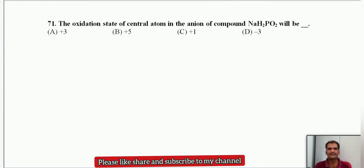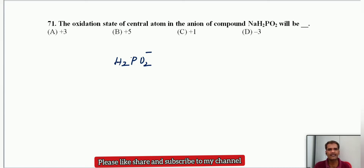The oxidation state of the central atom in the anion of NaH2PO2: the anion is H2PO2⁻ and Na⁺ is the cation. The central atom is phosphorus, and its oxidation state is +1. Answer: option C, +1 oxidation state.